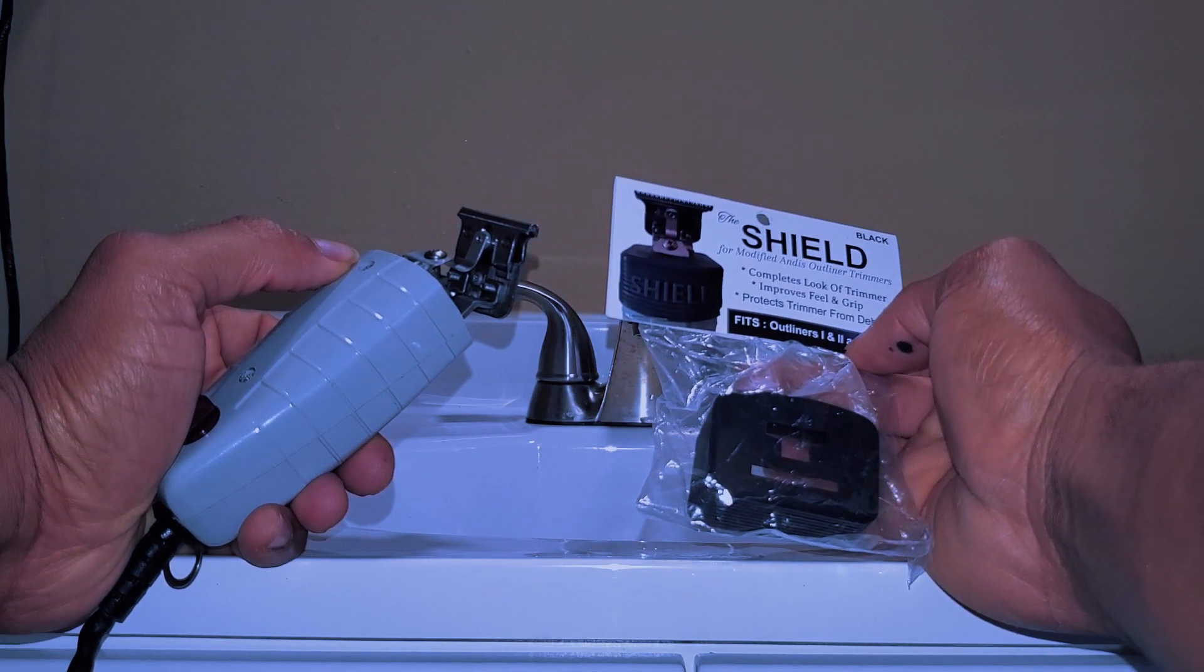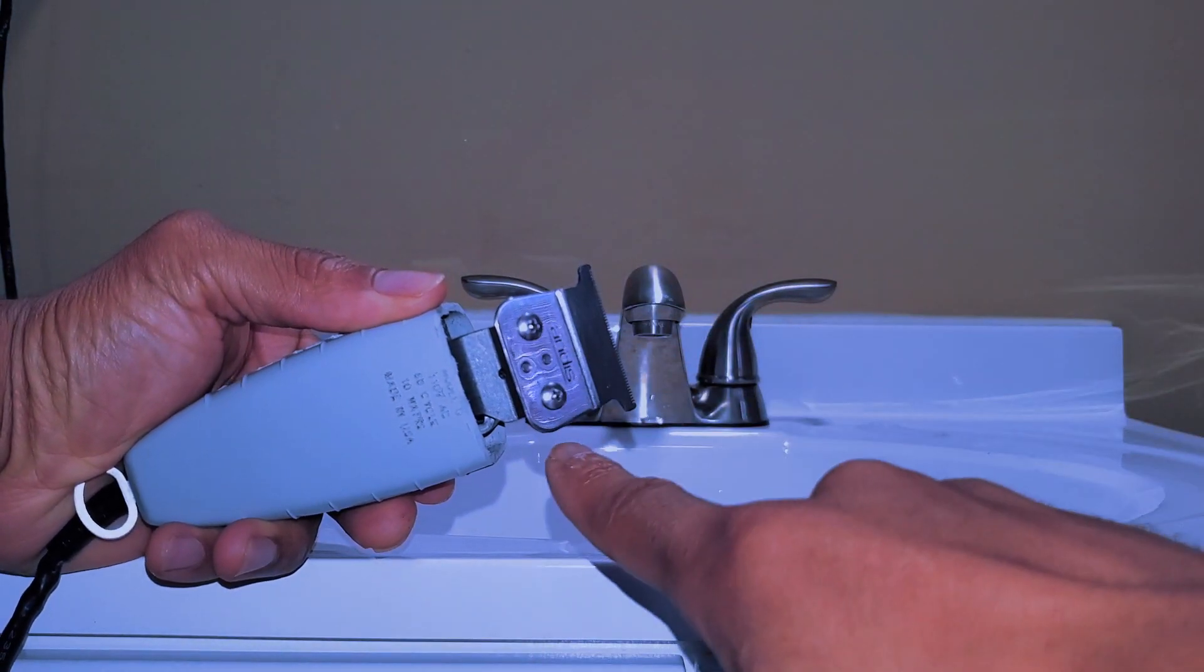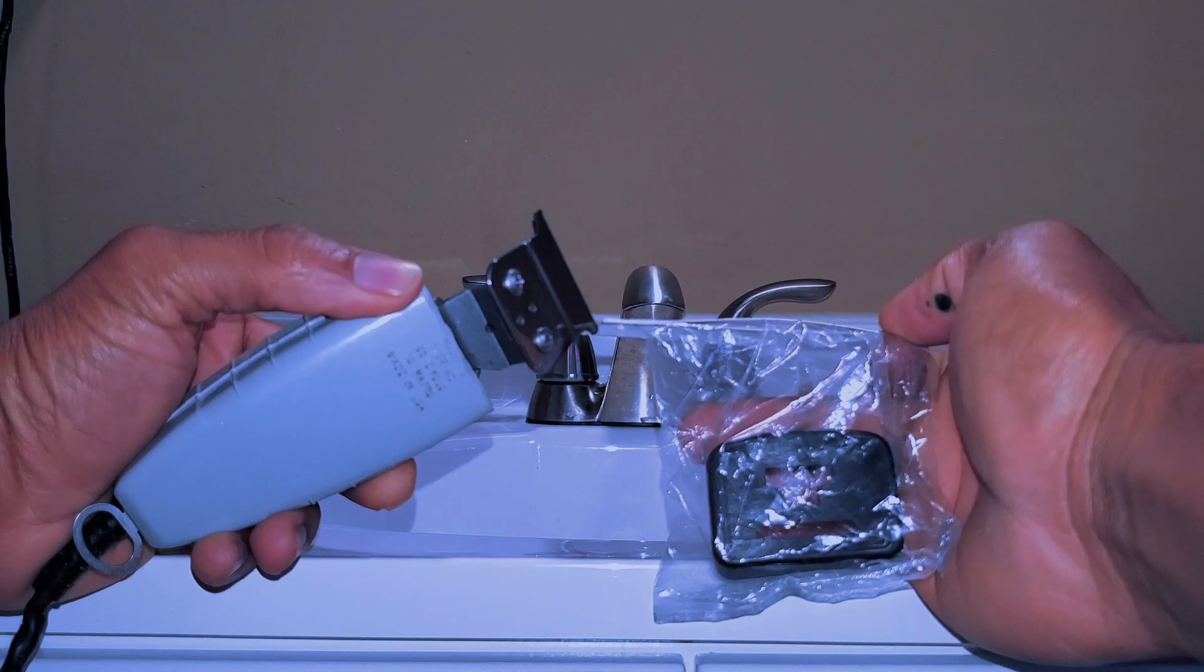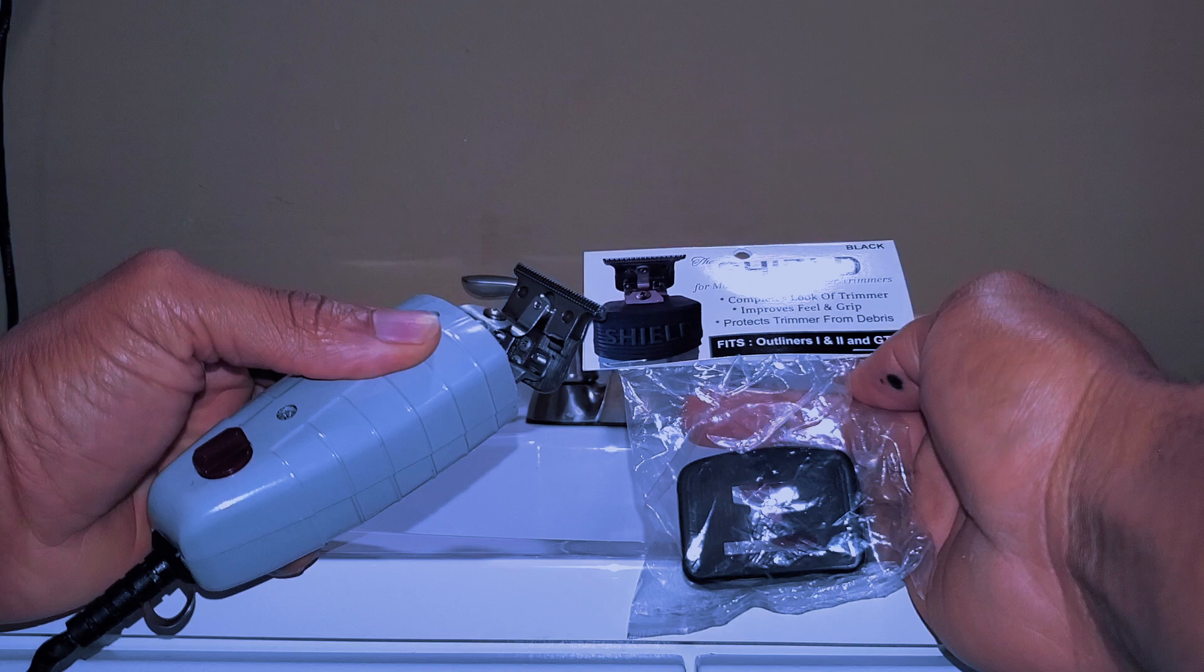I'm gonna put these on real quick. Pretty much all we'll have to do is take these two screws out, slip the Shield onto the trimmer, put the blade back on, tighten up the two screws, and that should be it. So I'm gonna do that real quick and then I'll show you guys what it looks like.